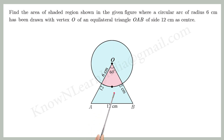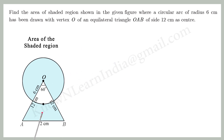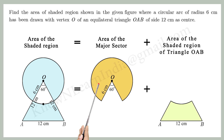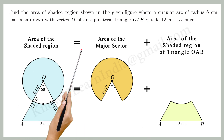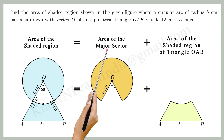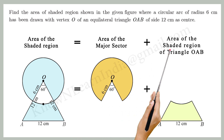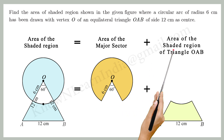We can see that the shaded region actually has two parts: 1. The major sector of the circle, and 2. The shaded region of the triangle OAB. Therefore, the area of the shaded region equals the area of the major sector of the circle plus the area of the shaded region of triangle OAB.